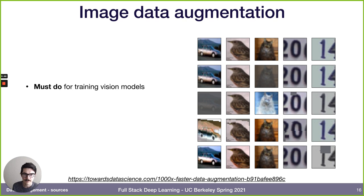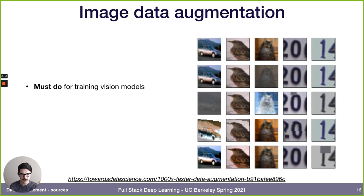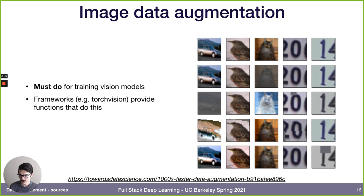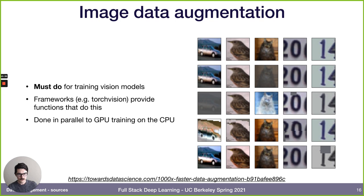Augmenting your training data is table stakes - you must do it, at least for vision models. Original images can be augmented by messing with contrast, cropping different parts, inverting, taking patches out, blinking out patches, pixelating, rotating, or shearing. Every framework like TensorFlow and PyTorch provides functions for this. Augmentation runs on the CPU in parallel while the GPU trains - as the GPU trains, the CPU is generating augmented training data.